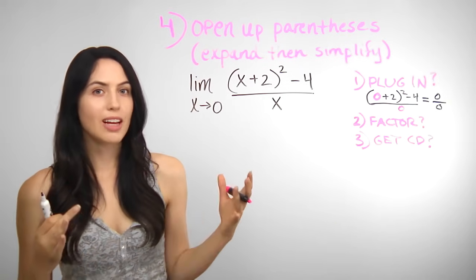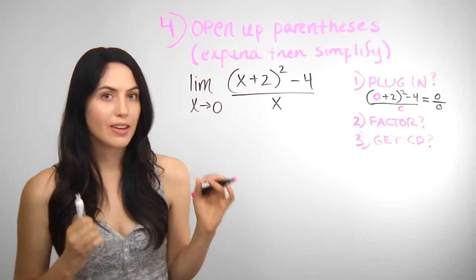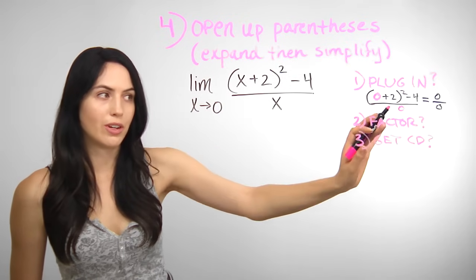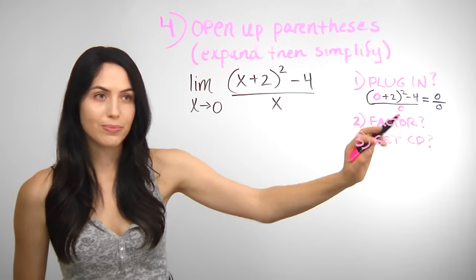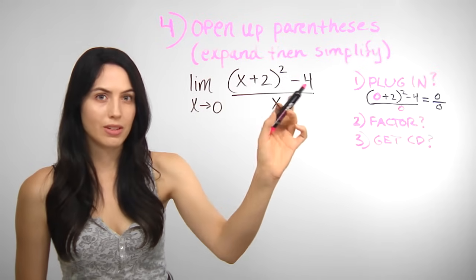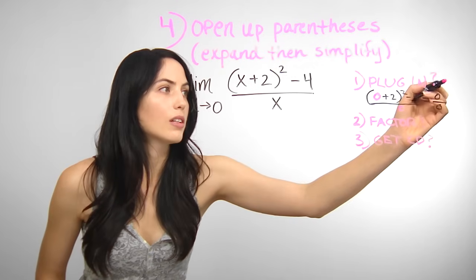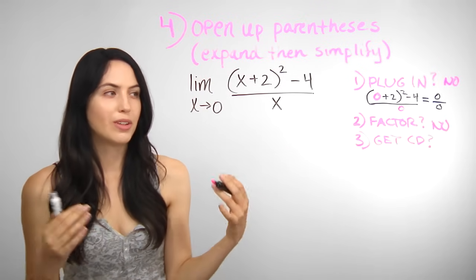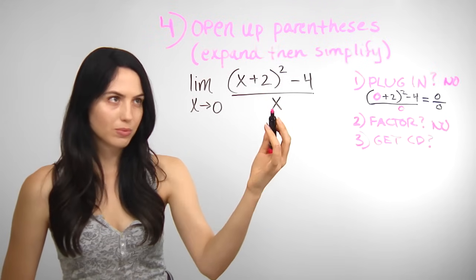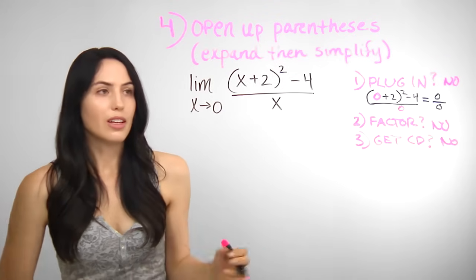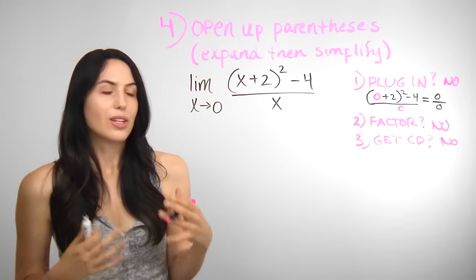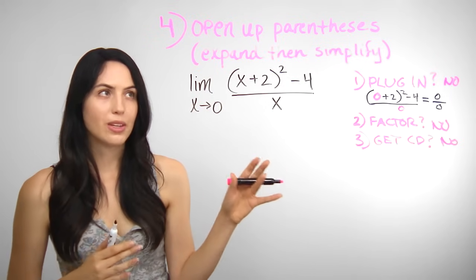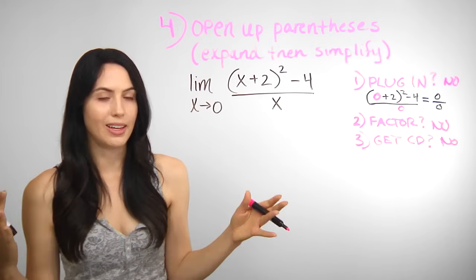Here's another common type — less common, but still useful. First, definitely still try plugging in. When you plug in 0, unfortunately you get zero over zero, so you have to move on. Ask yourself if you can factor — there's really nothing common to pull out here, so no. Then ask if you can get a common denominator — there's really nothing to get a common denominator between, so no. Then as a fourth approach, see if you can expand everything: multiply out, distribute, foil, and then simplify, so that hopefully something cancels and you'll be able to plug in at the end and find a limit.